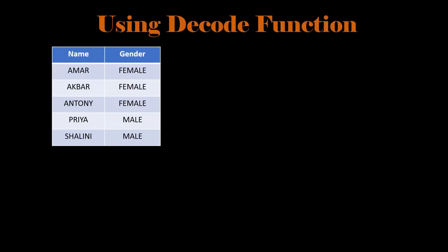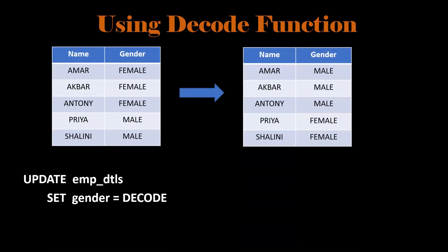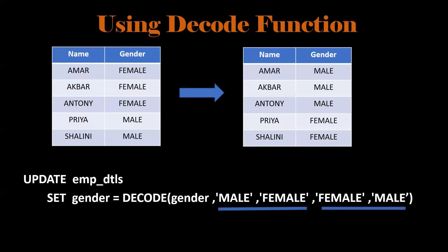Next one using decode function. Decode is like a key value pair. If gender matches to male, then female we are taking. If gender matches to female, male is taking.